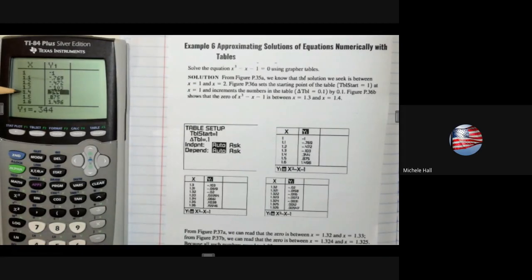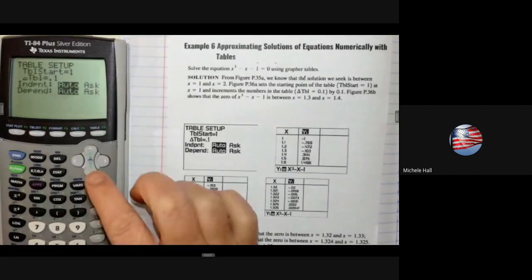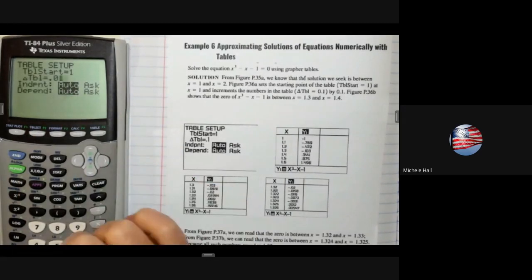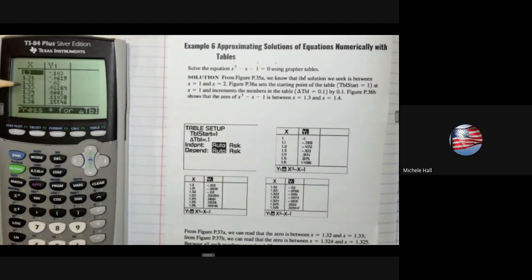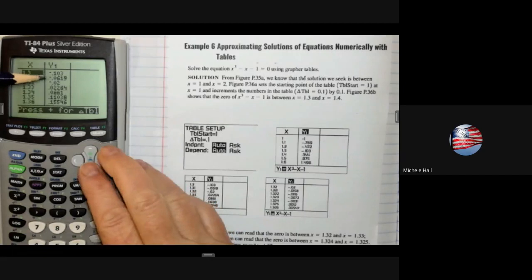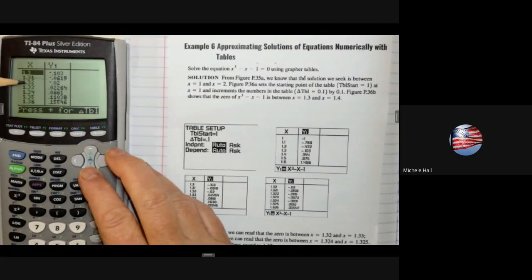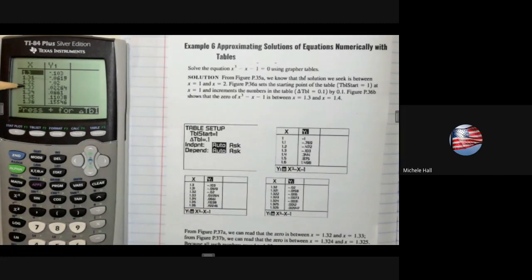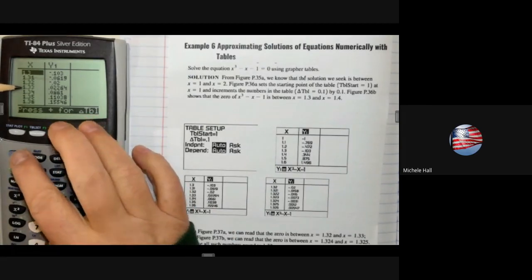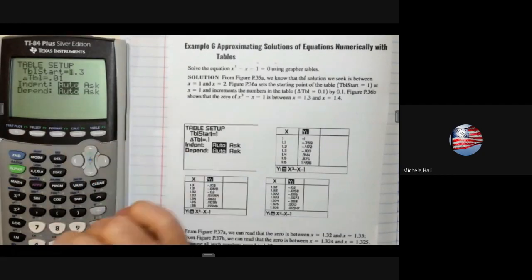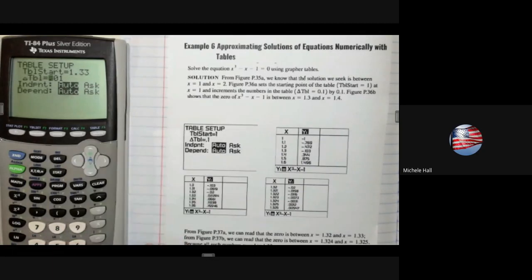Now I would like to break that down even more. So let's go to the hundredths place. Table setup. We're going to go to 0.01 and I would like to start at 1.3. Starting at 1.3, we're approaching 0. Negative 0.02 and 0.02, so we're between 1.32 and 1.33. I could go another decimal place and start at 1.33. So start at 1.33 and let's go to the thousandths place.